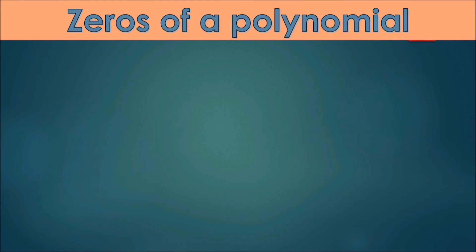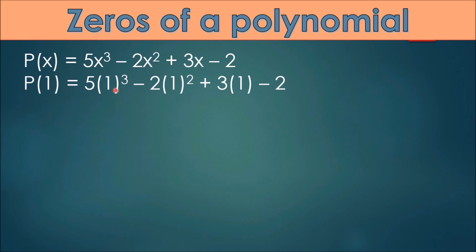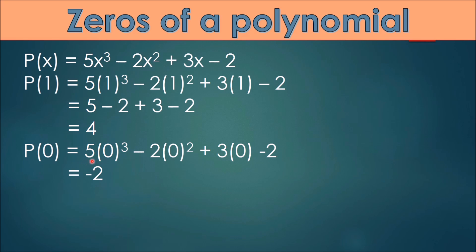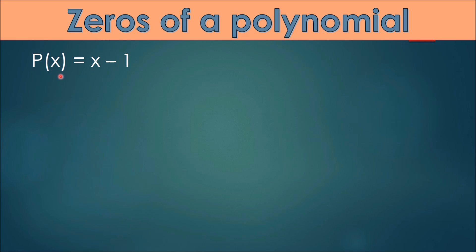Let us now study zeros of a polynomial. Consider the polynomial p(x) = 5x cubed minus 2x squared plus 3x minus 2. If we replace x by 1, we get 5(1)³ minus 2(1)² plus 3(1) minus 2, which simplifies to 5 minus 2 plus 3 minus 2 = 4. So the value of p(x) at x = 1 is 4. For p(0), all terms with x become 0, leaving minus 2, so p(0) = minus 2. Now consider p(x) = x minus 1. If we replace x by 1, we get p(1) = 1 minus 1 = 0. Since p(1) = 0, we say that 1 is a zero of the polynomial p(x).